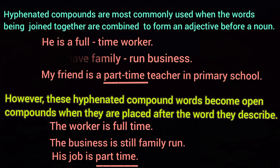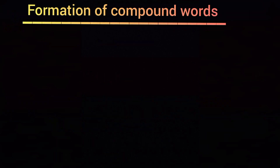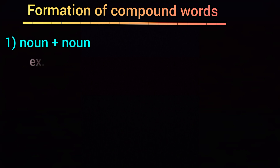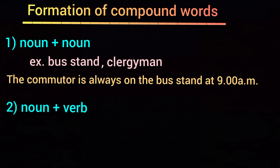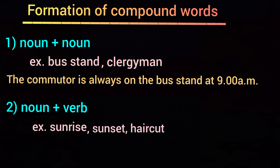Now let us see how to form compound words. First is noun plus noun — for example, bus stand, where bus is a noun and stand is also a noun. 'The commuter is always on the bus stand at 9 am.' Another example is clergyman. Second is noun plus verb — for example, sunrise, where sun is a noun and rise is a verb. Other examples: sunset, haircut. 'Sunrise in Darjeeling is very beautiful.'